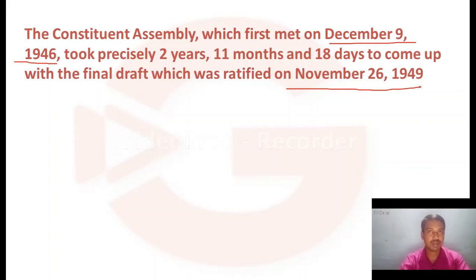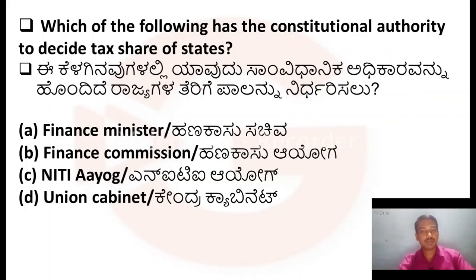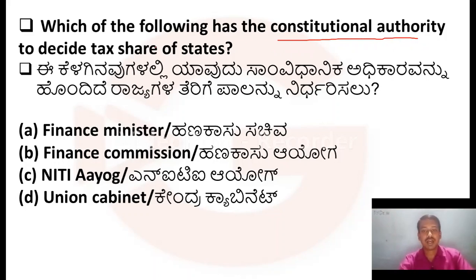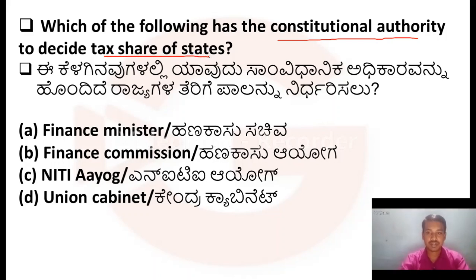I hope you got this. Now we'll move to the next question. Which of the following has the constitutional authority to decide tax shares of states? Option A: Finance Minister. Option B: Finance Commission. Option C: Niti Aayog. Option D: Union Cabinet.